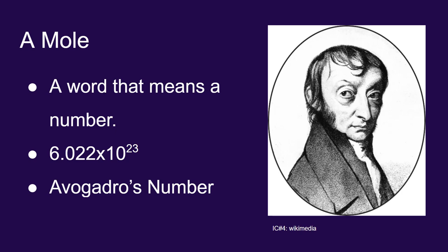If you have Avogadro's number of atoms, you would have a mole of atoms. So when we say we have a mole of something, we are using a word that represents a number. The number in this case is Avogadro's number.